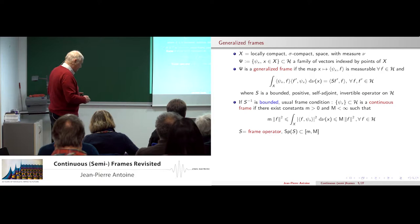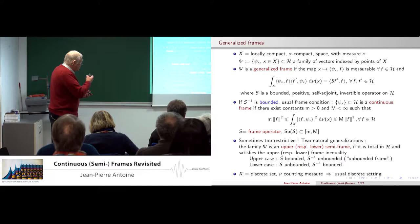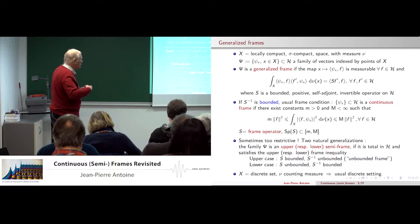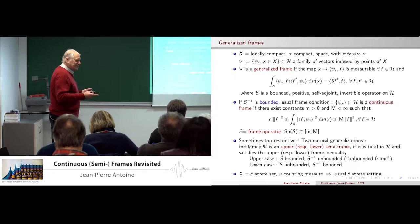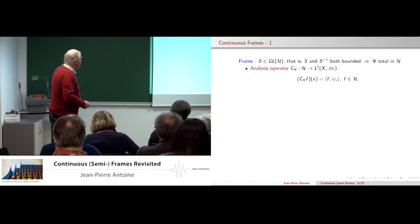The precisely interesting case is where the inverse is unbounded — then you can really start working. In terms of the operator S: the upper semi-frame case is where S is bounded but S minus one is unbounded. For the lower case it is the opposite — S is unbounded but the inverse is bounded. And of course the worst case is where both are unbounded, but you don't have much to say there. If you take X as a discrete set with counting measure, you are back to the familiar discrete setting.